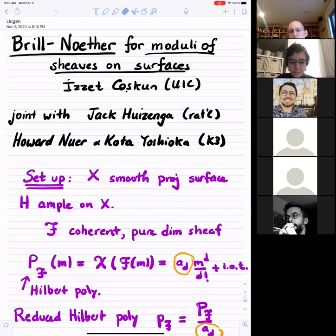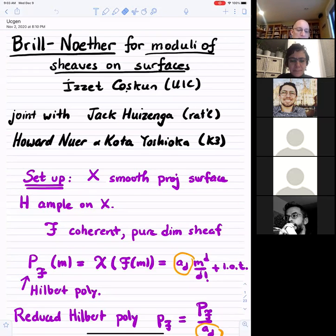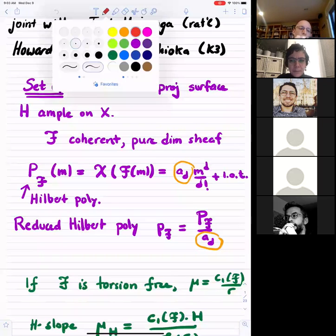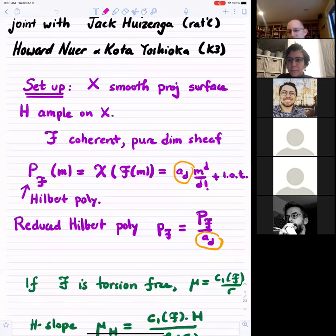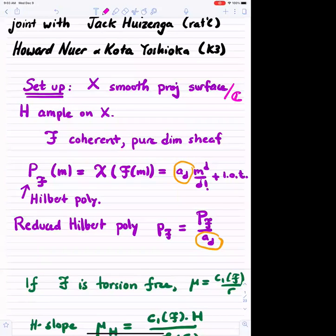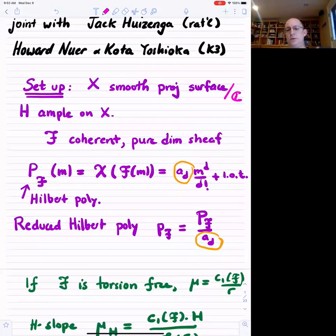This will be joint work with Jack Huizinga when it comes to rational surfaces, and Howard Neuer and Kota Yoshioka when it comes to K3 surfaces. The basic setup is as follows: we start with a smooth projective surface over the complex numbers, with an ample divisor, and we want to understand moduli spaces of sheaves on these surfaces.